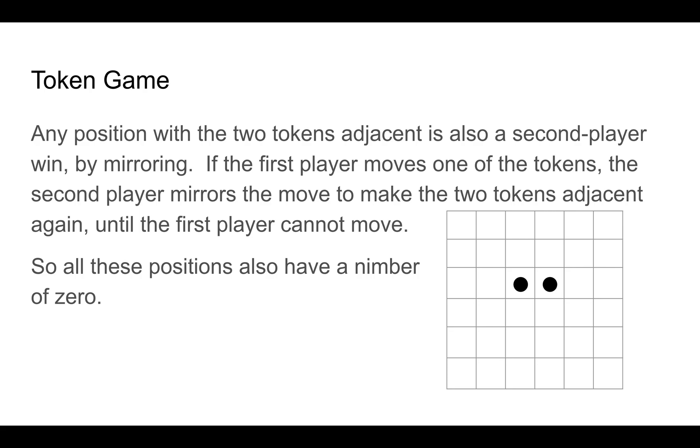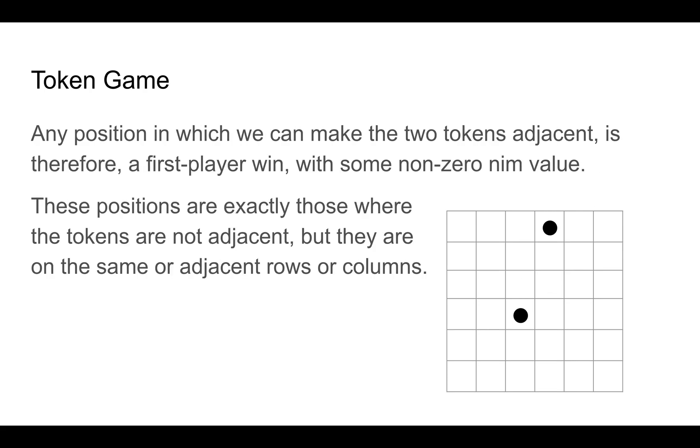So let's think a little bit more about this. What if a token is in some dimension, it's within one of the other token, but it's not adjacent. In that case, the player to move can simply make the tokens be adjacent by moving one of the tokens. And when they do that, they've taken it to a critical position and therefore they have won the game. So any position in which either coordinate is within one is a win for the next player, except for the case where they're already adjacent. So this is a nice, we're starting to understand how this game works.